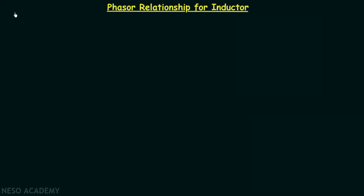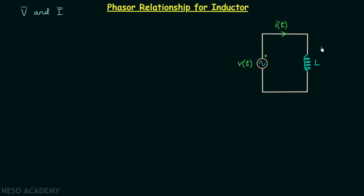In the previous lecture we obtained the phasor relationship for resistors and now we are going to find out the phasor relationship for inductors. This means we are going to find out the relation between the voltage phasor and the current phasor when we have an inductor with inductance equal to L. V(t) is the sinusoidal voltage applied across the inductor and I(t) is the current in this circuit, which is also a sinusoid.